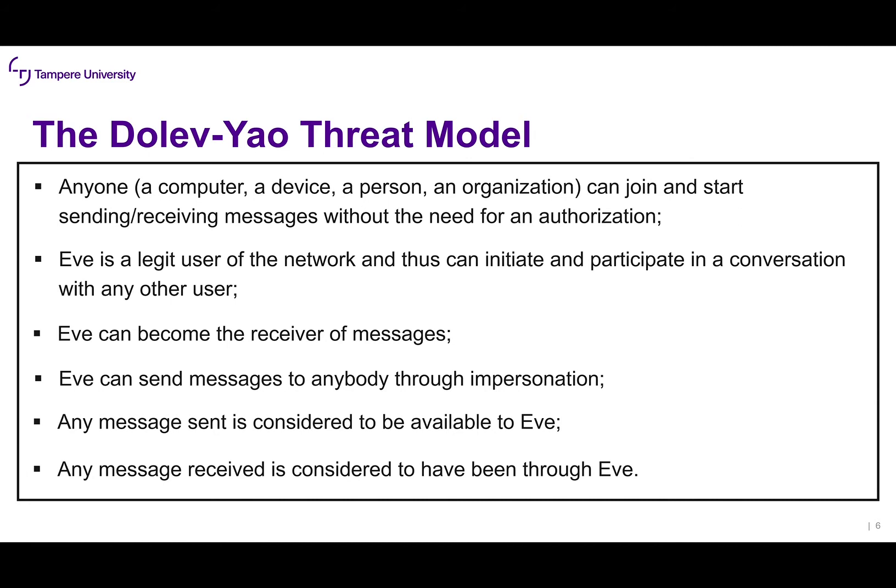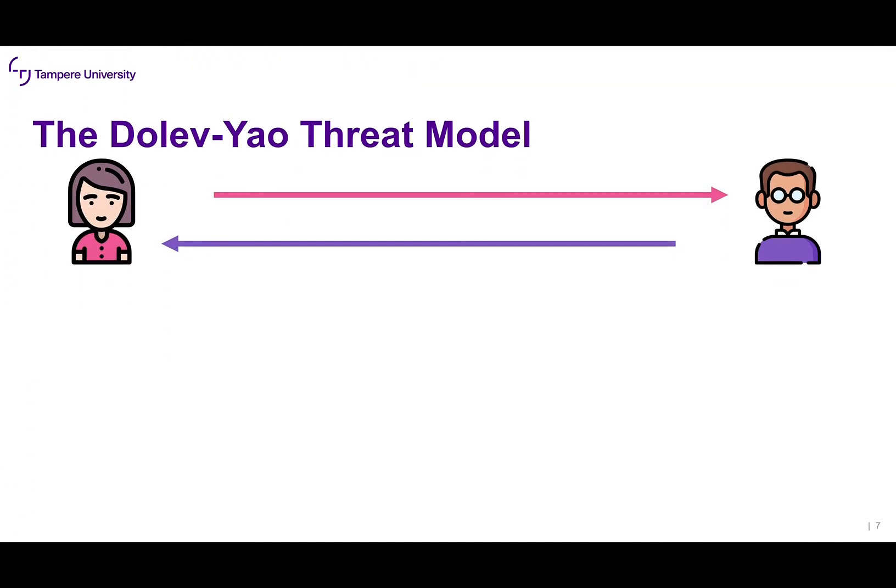Everyone in the network sees Eve as a legitimate user — no one can recognize Eve as a malicious entity. This is really important. In addition, Eve can become the receiver of all messages and can send messages to anybody through impersonation. For example, she may try to contact Alice by saying 'Hi, I'm Bob,' impersonating Bob. Furthermore, any message that is sent is considered to be available to Eve, and any message received is considered to have passed through Eve.